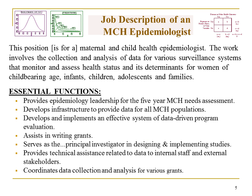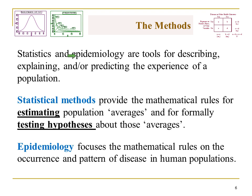That was just to set the stage. I'm going to talk now about how we use statistics and epi in our work to support all of those functions. Statistics and epi are tools for describing, explaining, or predicting the experience of a population. We use statistical methods as the mathematical rules for estimation and hypothesis testing, and our epi skills focus those mathematical rules on the occurrence and pattern of disease in human populations. That description is even probably too narrow for what we do as MCH Epis, because we're looking a lot at the occurrence of health services and how health systems work together, not just health status or disease.